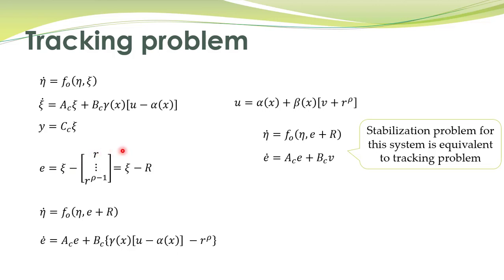With these assumptions, we define an error signal equal to the state vector xi minus the vector R, which contains the reference signal and its derivatives up to order rho minus one. So e = xi - R. The same system written in terms of this newly defined variable gives: eta_dot = f_0(eta, xi), and since xi = e + R, we can write e_dot = xi_dot - r_dot.